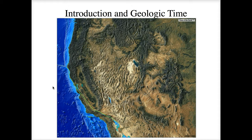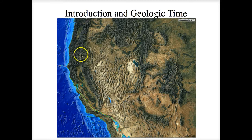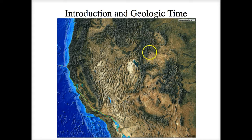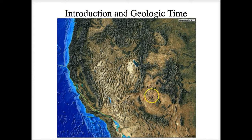Between the Basin and Range and south of the Wasatch, you see this large area which is sort of featureless — that's the Colorado Plateau. The Colorado Plateau and the Basin and Range, along with a little bit of the Sierras, is what we're going to focus on in this class. Other features you might recognize: the Great Valley of California, the Cascade Mountain Range, the Snake River Plain with Yellowstone, and various parts of the Rocky Mountains running all the way down into New Mexico.